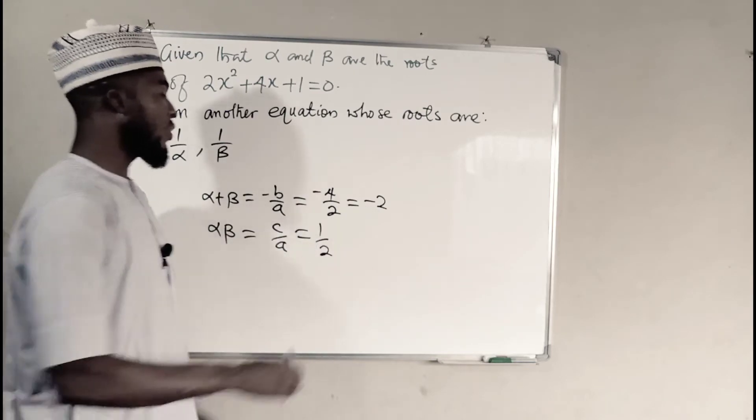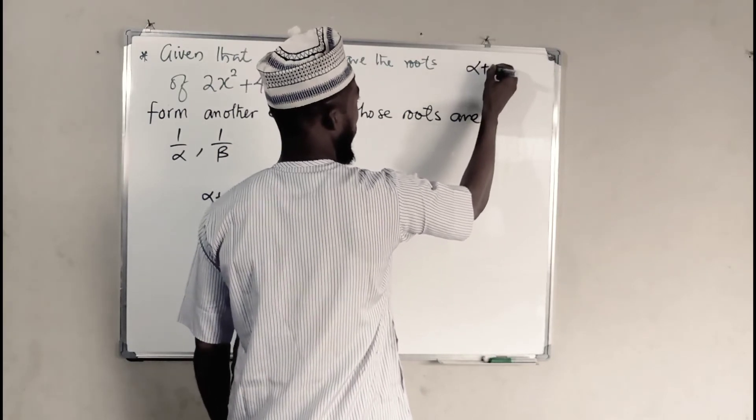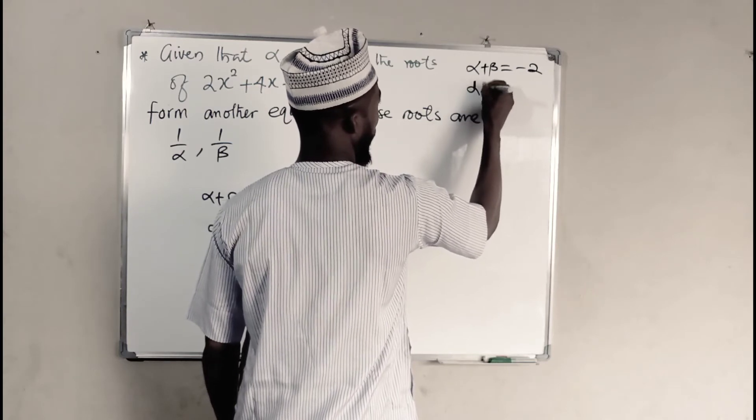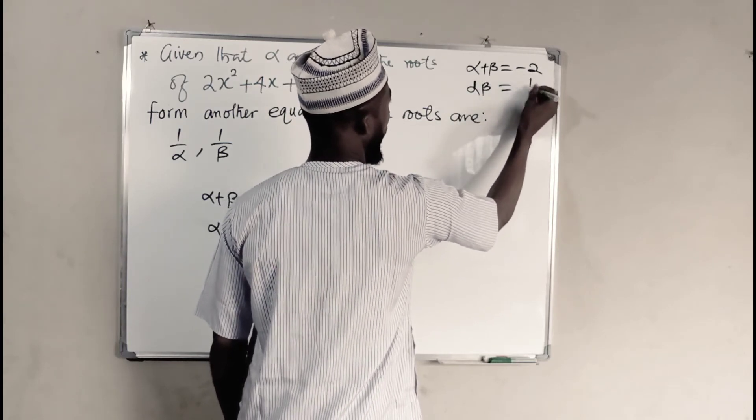So we can write these two aside. We have the sum to be equal to negative 2, and the product to be equal to 1 over 2.